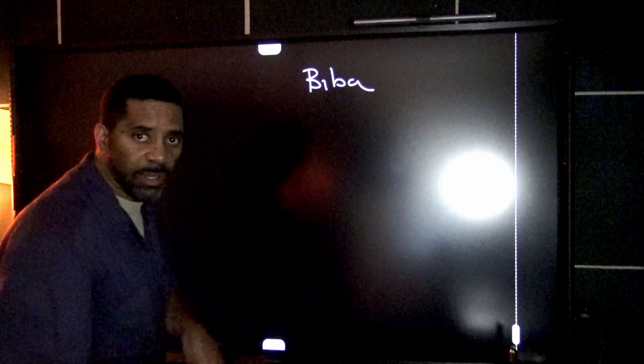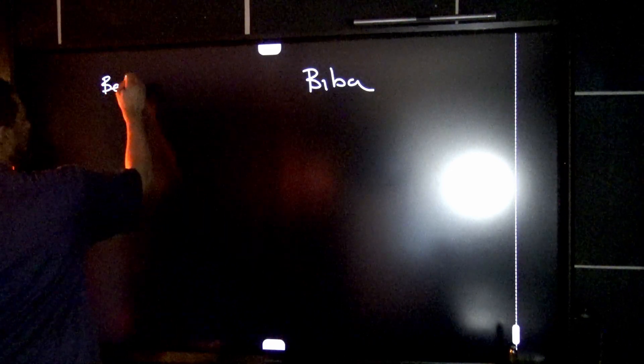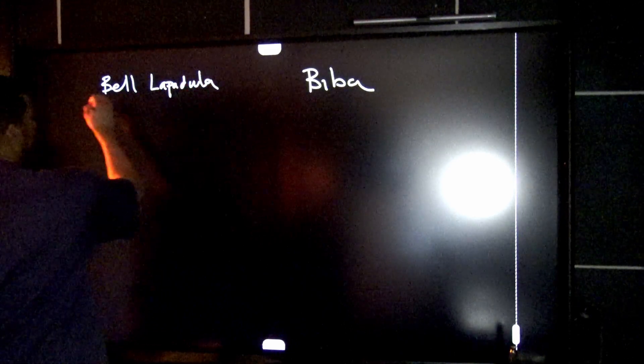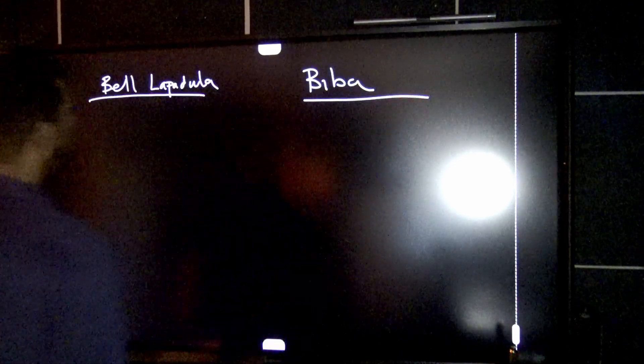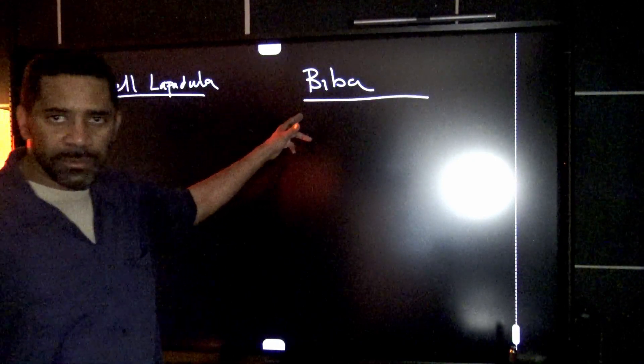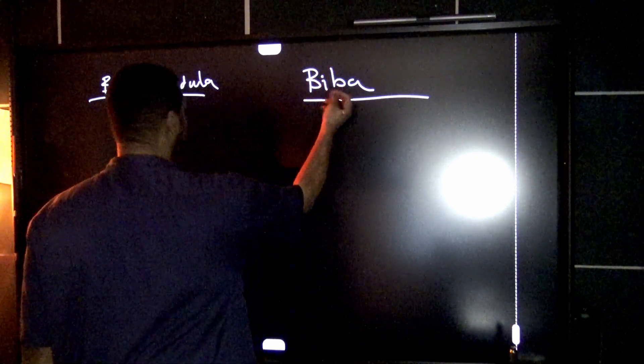You're gonna do this exactly on the test. Biba, and then you're gonna write Bell-LaPadula right here. So Biba is our integrity model, so I means integrity.